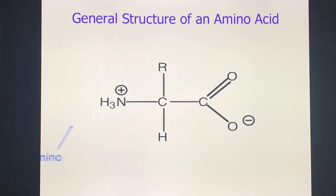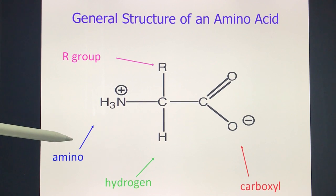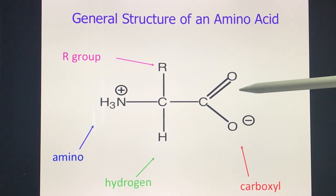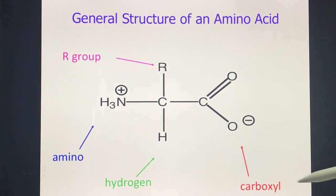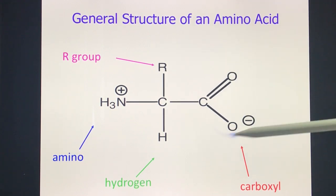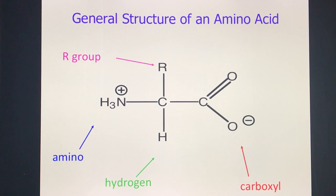We will first take up amino acids. This illustration shows the basic general structure of all amino acids. All amino acids will have an amino group — that's your NH3 — and all amino acids will have a carboxyl group, which is COO. All amino acids also have an R group, also known as the polar group in some references.